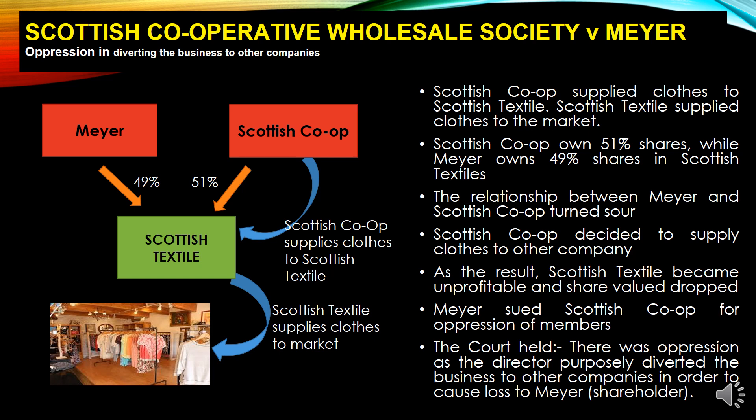Mayors sued Scottish Co-op for oppression of members, because Scottish Co-op's decision caused the profit to drop, the company became unprofitable, and the share value dropped. When Mayors went to court, he contended that because of this action by Scottish Co-op, the share value dropped and it became unprofitable — this was oppression against him. The court held that there was oppression, as the directors purposely diverted the business to other companies in order to cause loss to Mayors, causing the share value to drop and the company to become unprofitable.